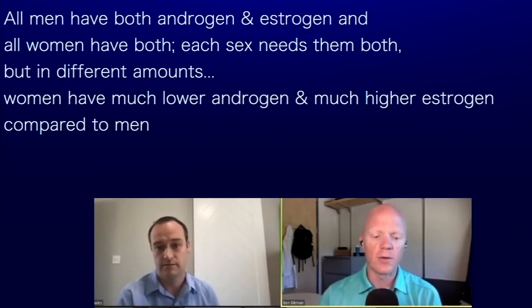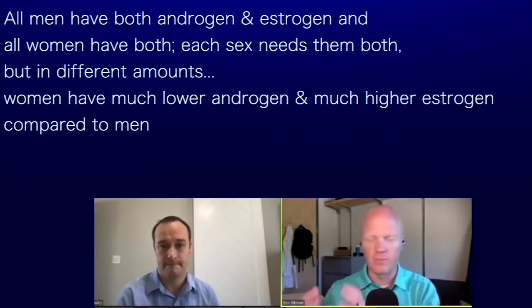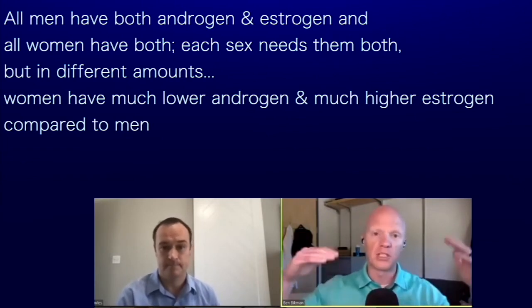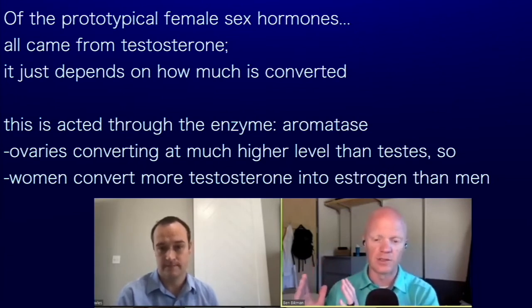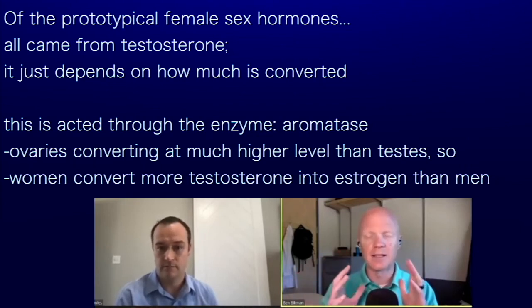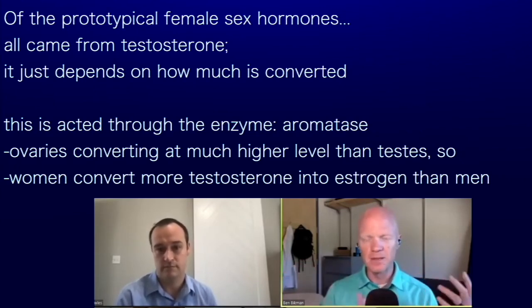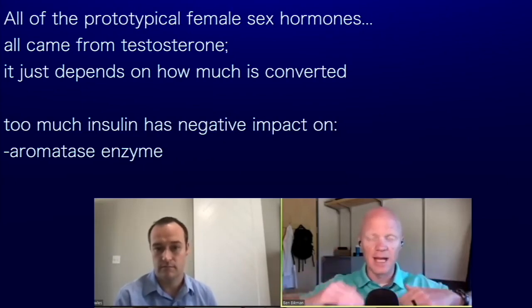Testosterone and androgens are prototypical male sex hormones, but that's an oversimplification — all men have both androgens and estrogens, and all women have both. It's just in different levels. Women have much lower androgens and much higher estrogen relative to men. All these prototypical female sex hormones came from testosterone — it's just a matter of how much is getting converted through the enzyme aromatase. Ovaries do this at a much higher level, converting more testosterone into estrogens.